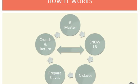Basically, the way it works is we start with one R master node. Using Snow, we launch n slaves, we prepare those slaves with data and other functions, and then we use the Snow load-balance parallelization functions to crunch and return the numbers until we get the whole dataset computed, and then return it to the R master node.